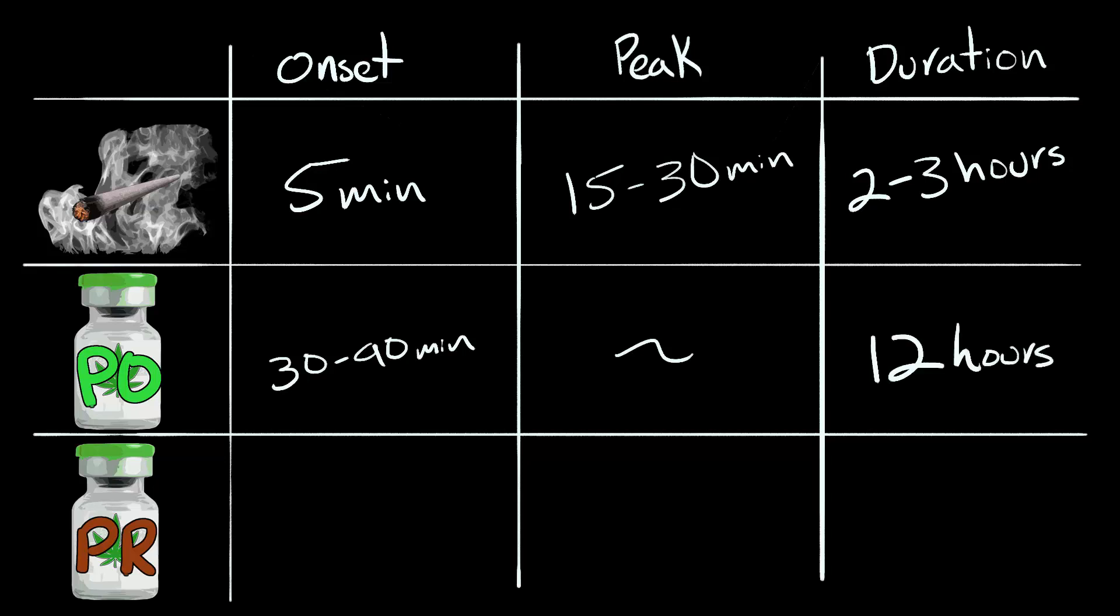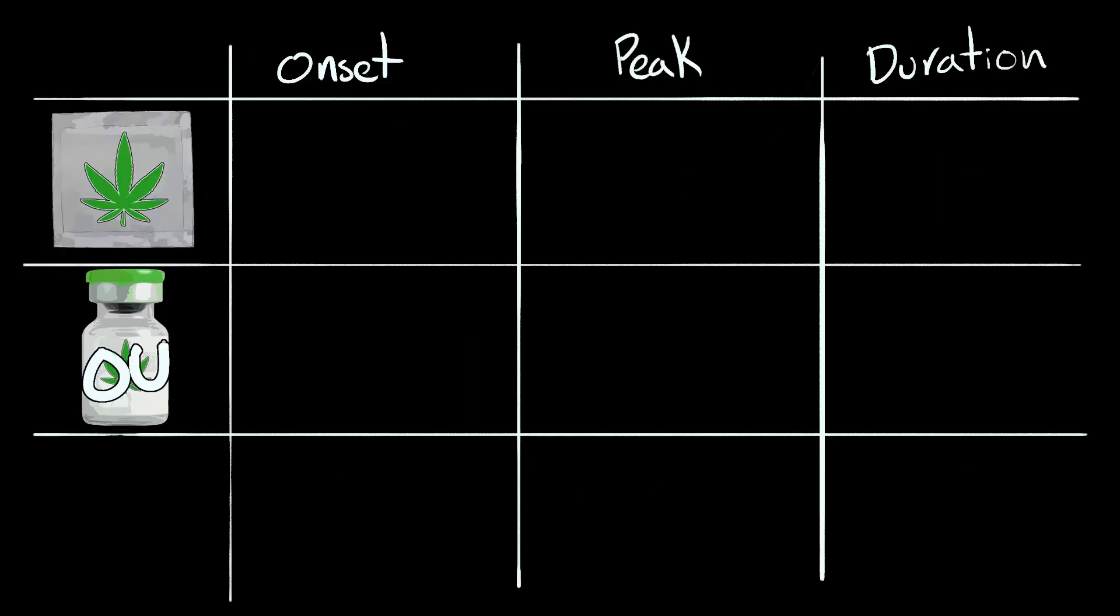Rectal duration varies greatly depending on the composition of the cannabinoid in question. Best I could find readings on is a peak in 2-8 hours. Transdermal peaks in 1 hour and lasts up to 48 hours. And ophthalmological? I couldn't find any solid duration information for. Not enough people willing to put marijuana in their eye, it seems.